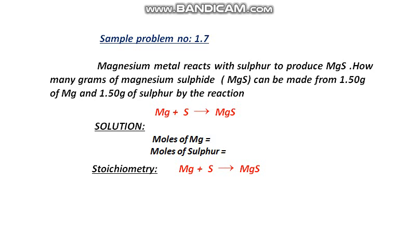Simply, the meaning is that when 1.50 gram of magnesium and 1.50 gram of sulfur react together, how much amount of magnesium sulfide is produced in terms of grams? First of all, you should convert grams of magnesium and grams of sulfur into moles. The formula for moles is: moles = given mass divided by molar mass.